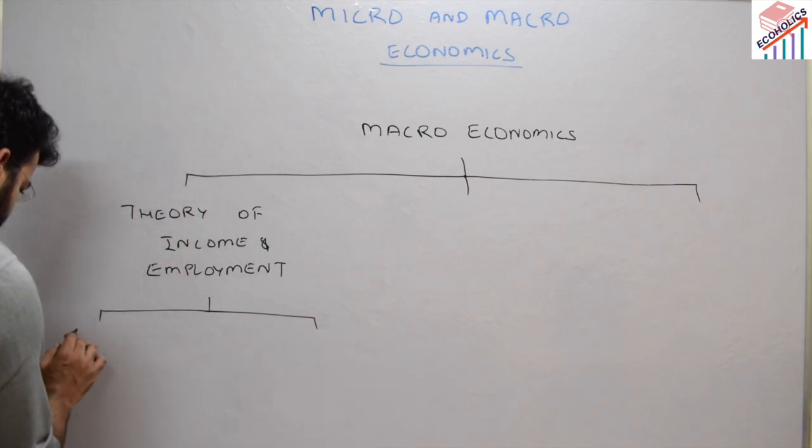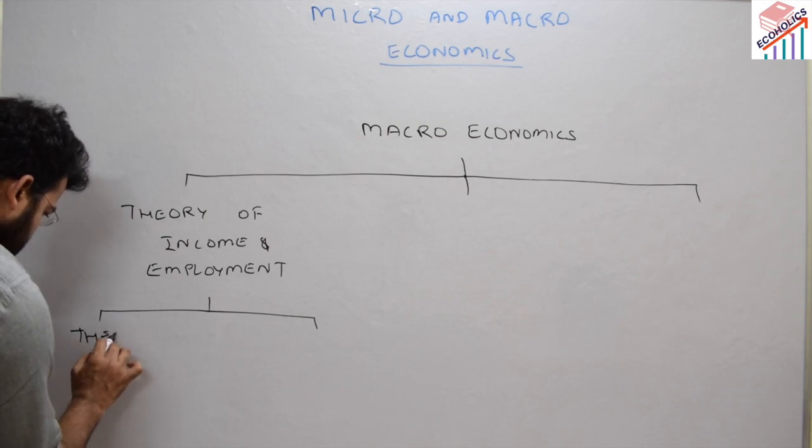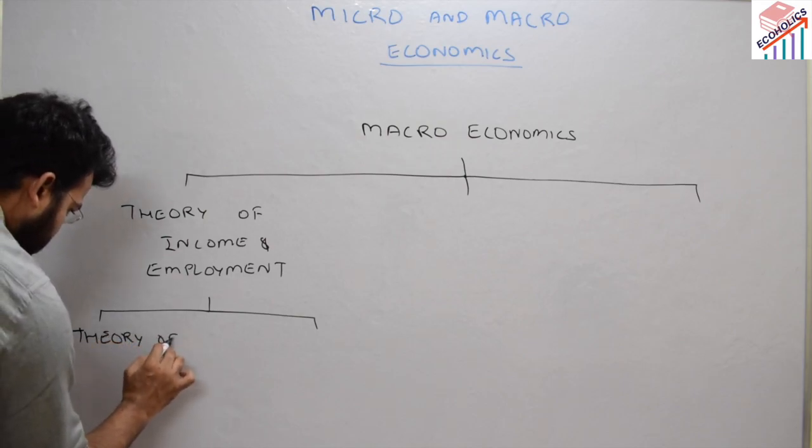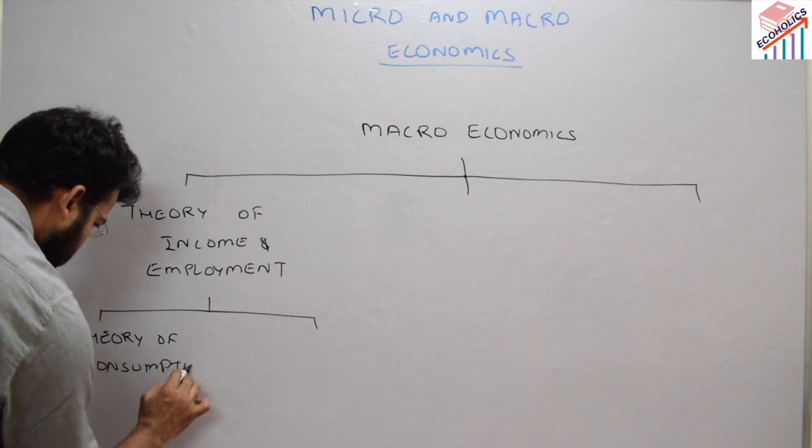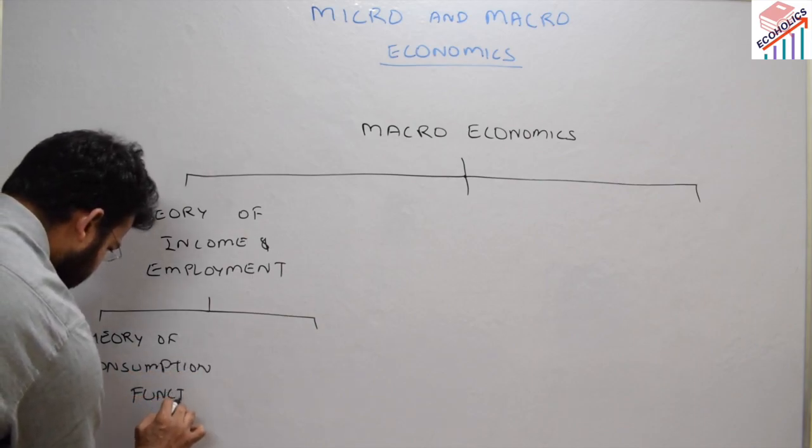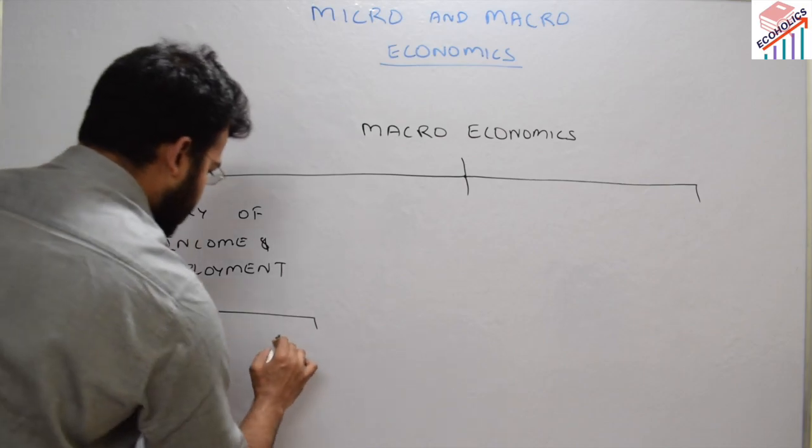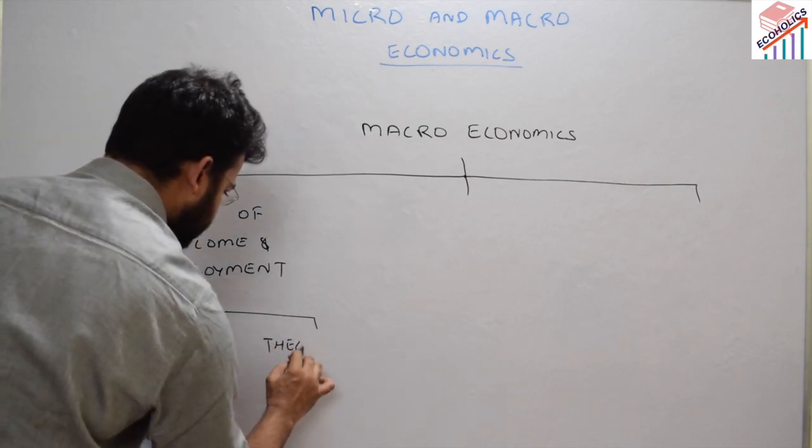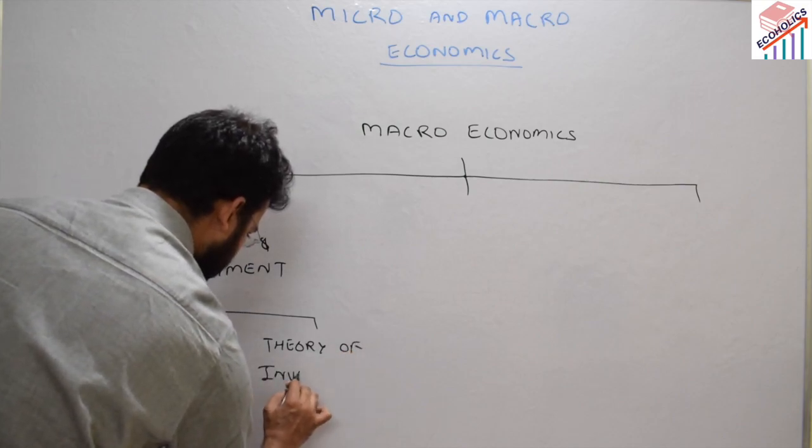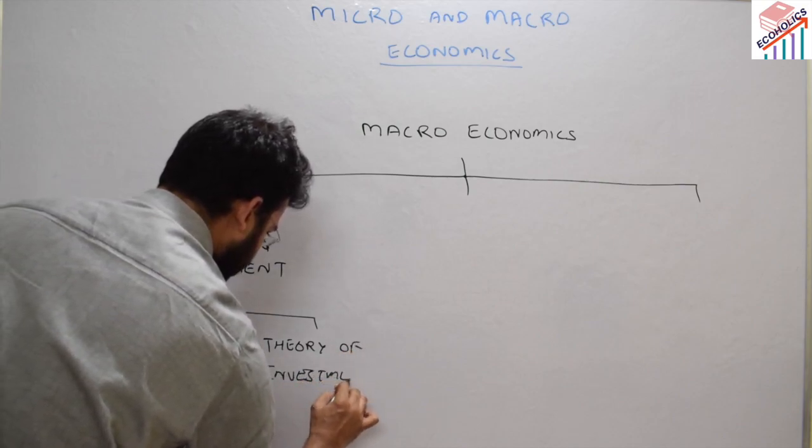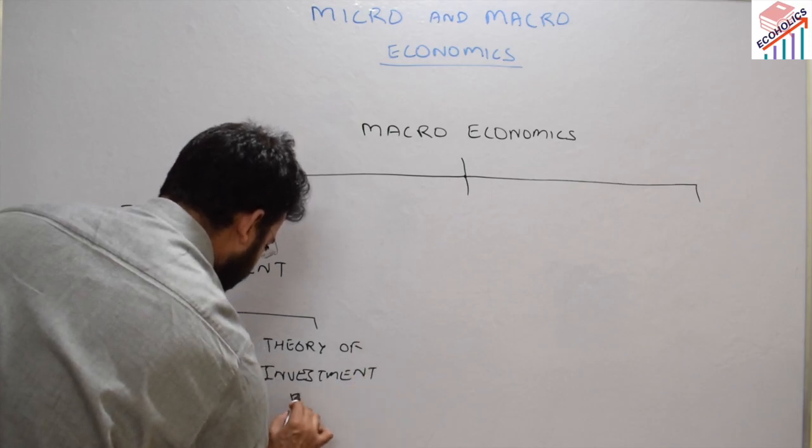The first theory is the theory of consumption function, and the second is the theory of investment function.